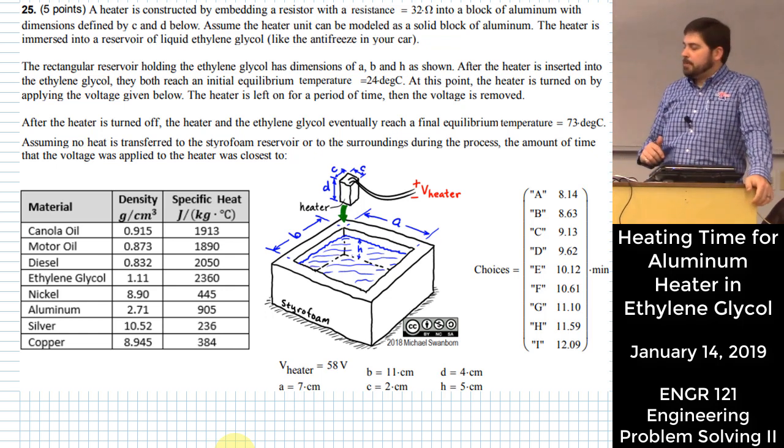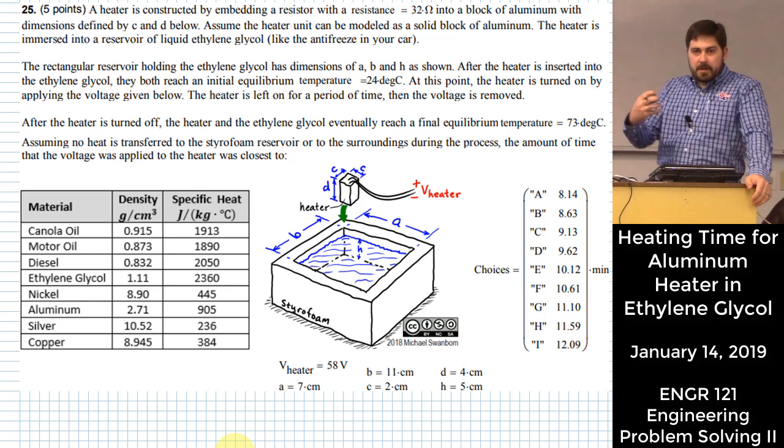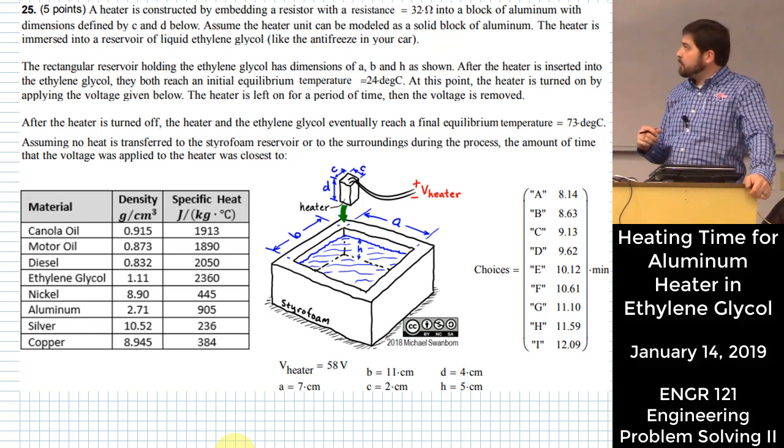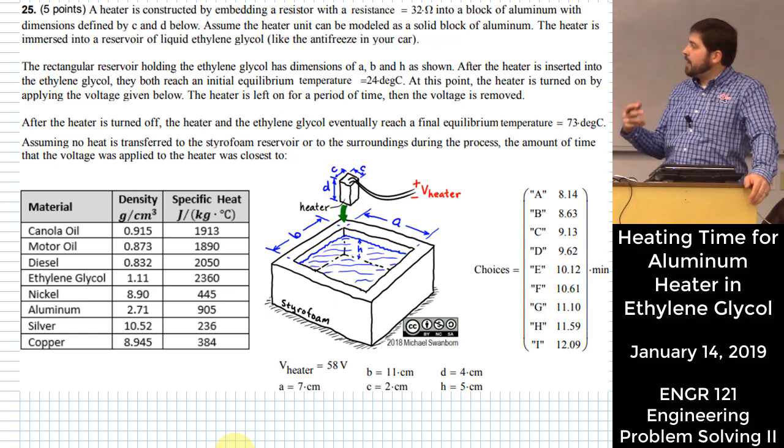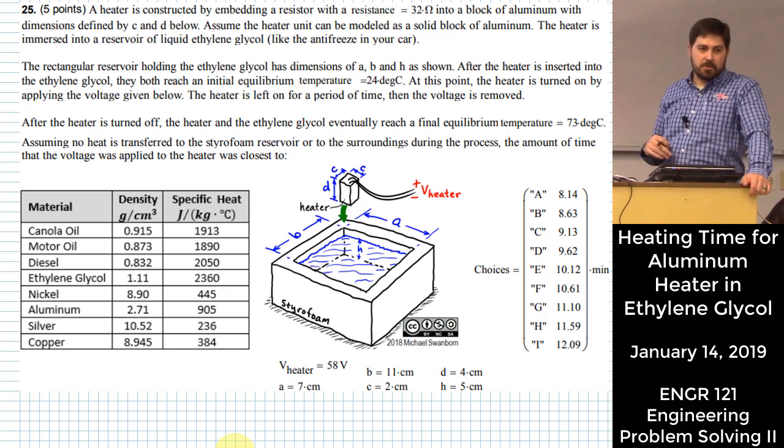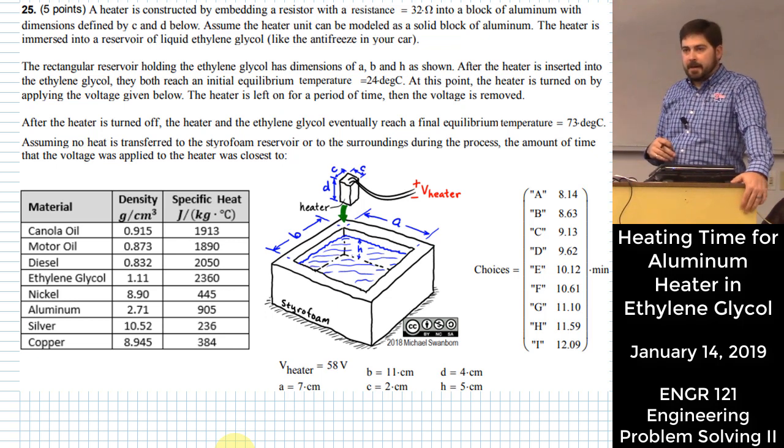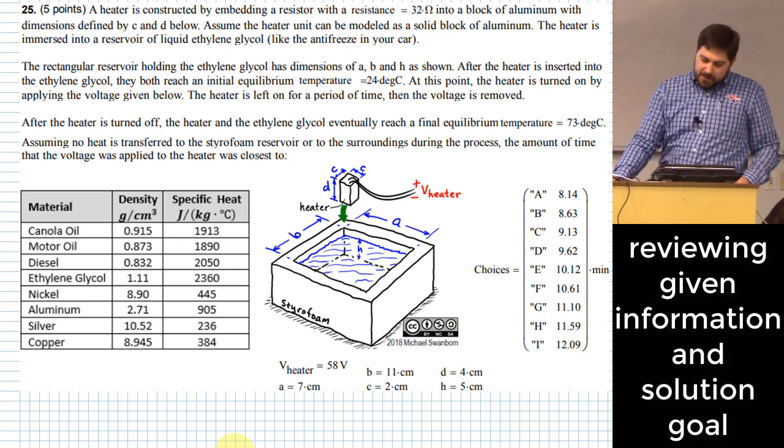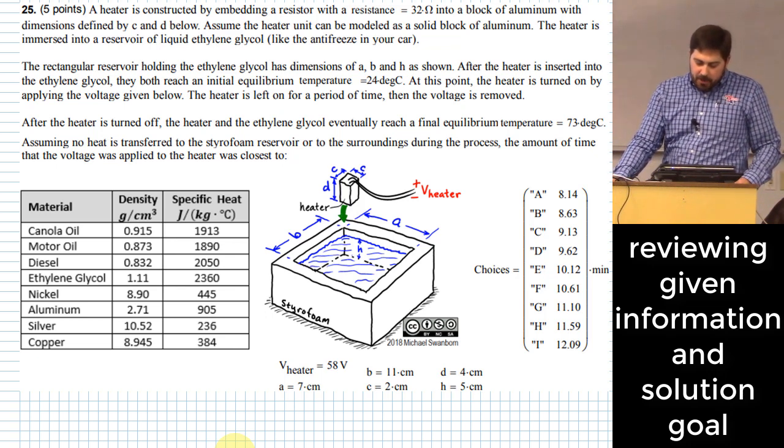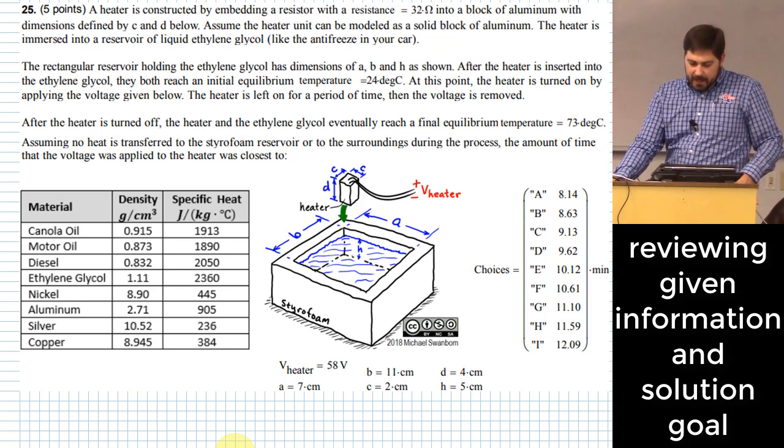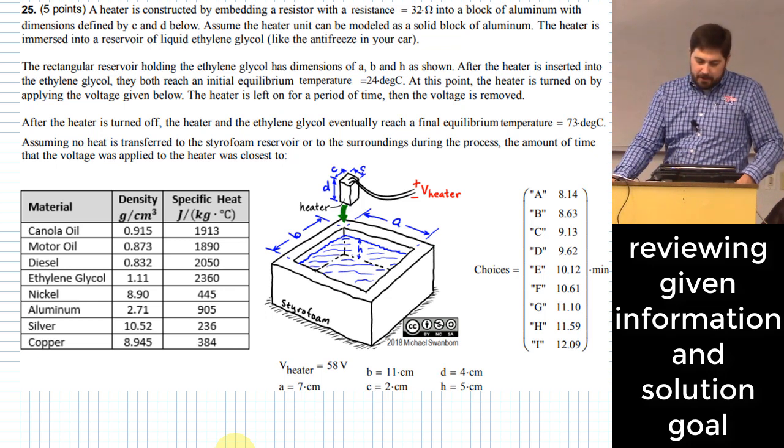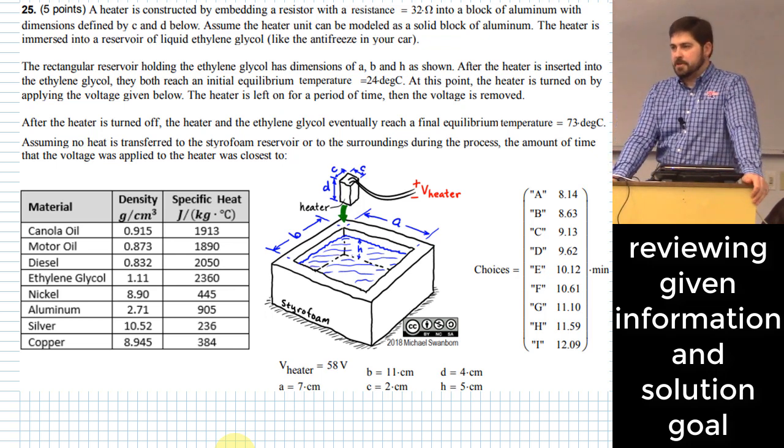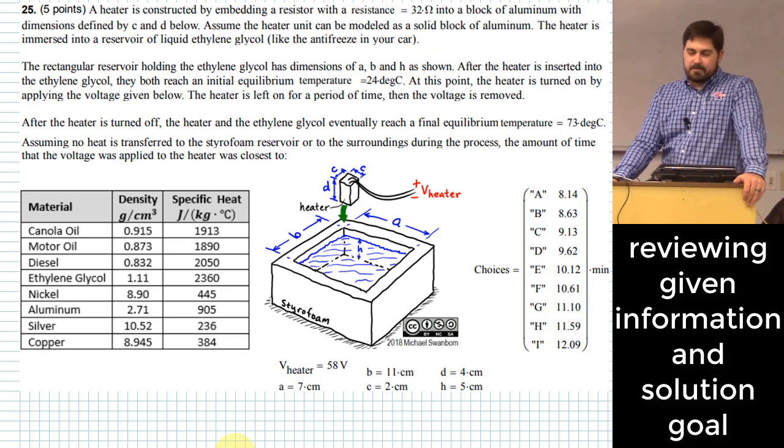A heater is constructed by having a resistor embedded inside an aluminum casing. We're going to say that the material that makes up the resistor itself is negligible relative to the amount of material of the case, so we'll treat it as a block of aluminum in terms of its specific heat value. That heater is then immersed into a bath of ethylene glycol, which is the same type of formula that typically composes antifreeze that goes into your car.